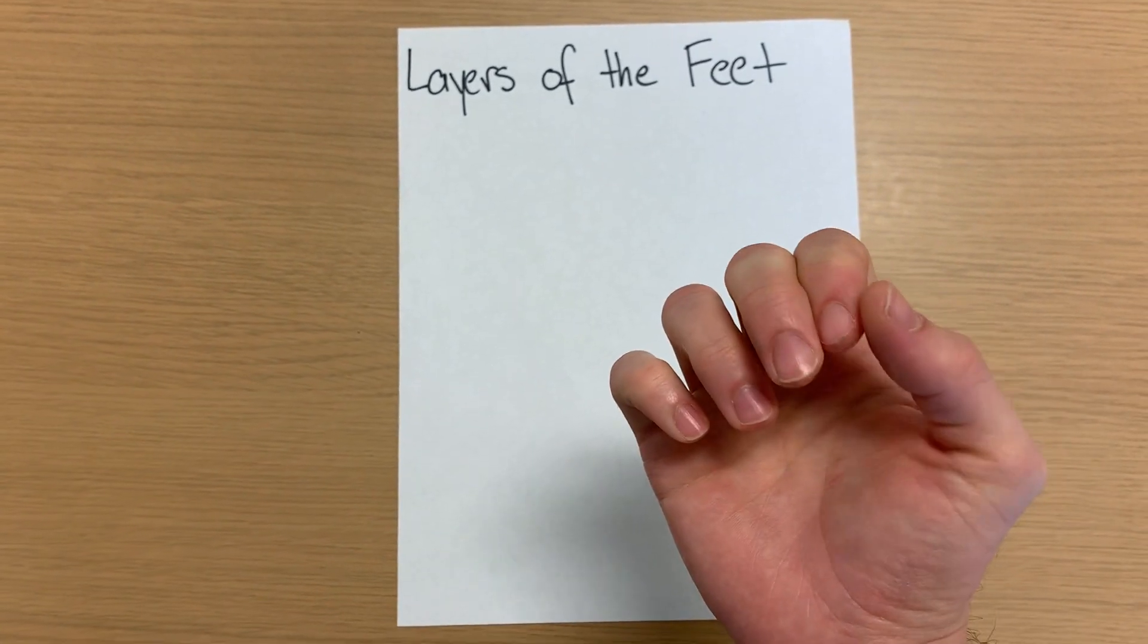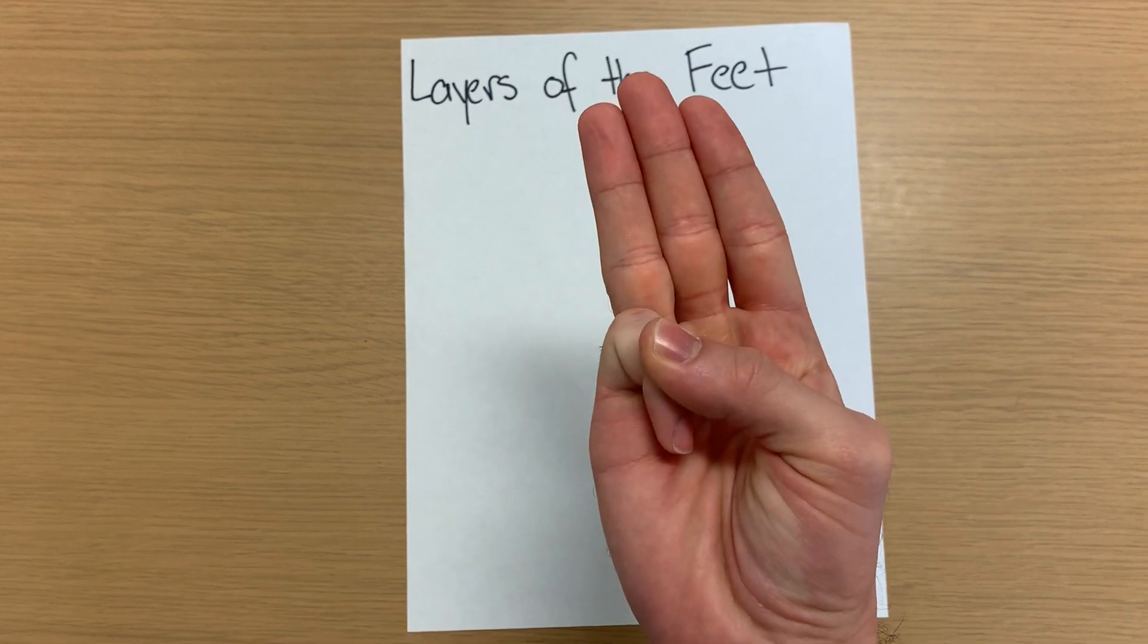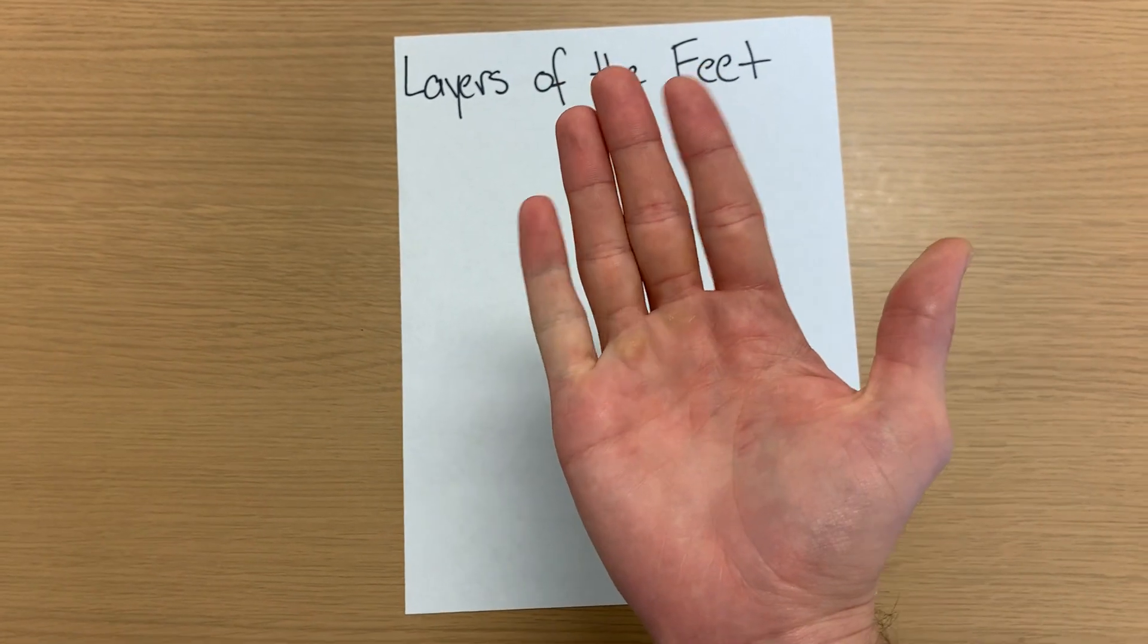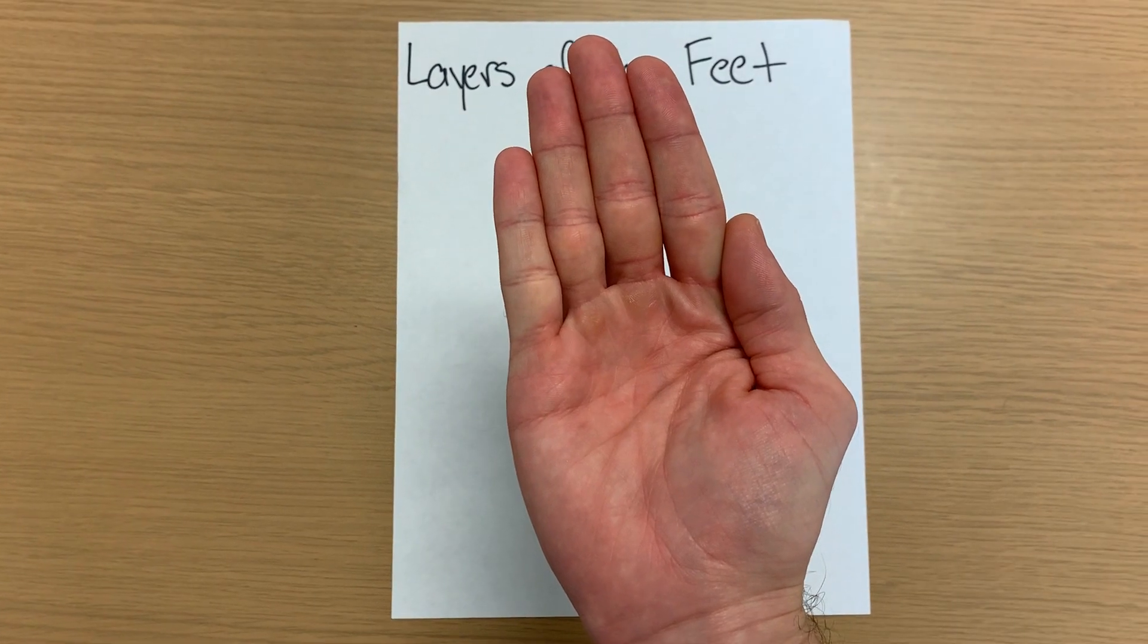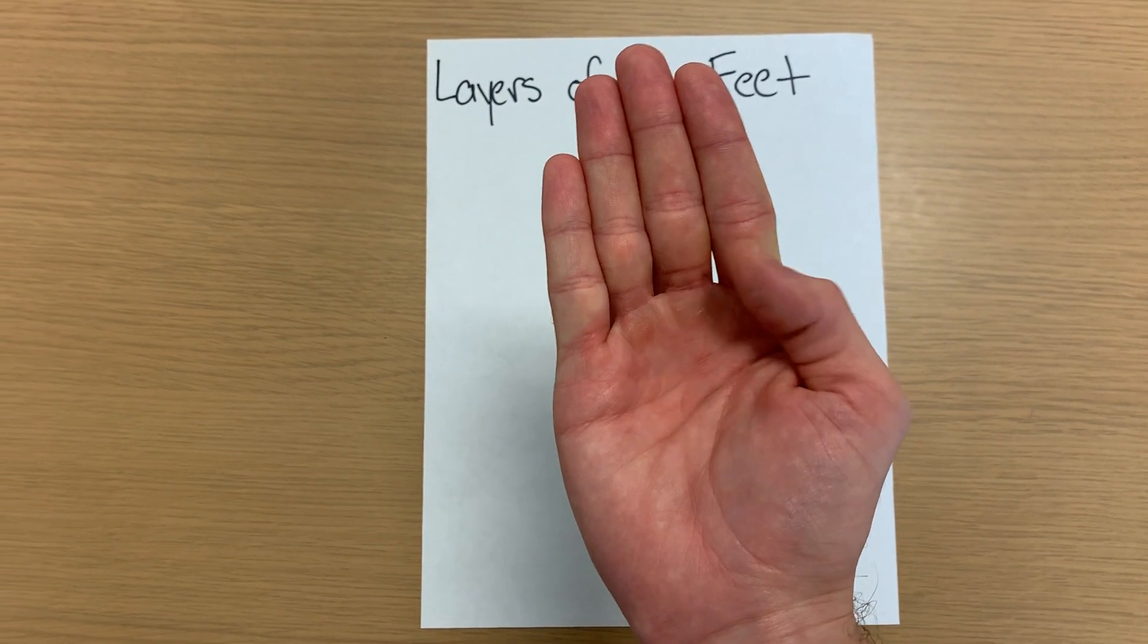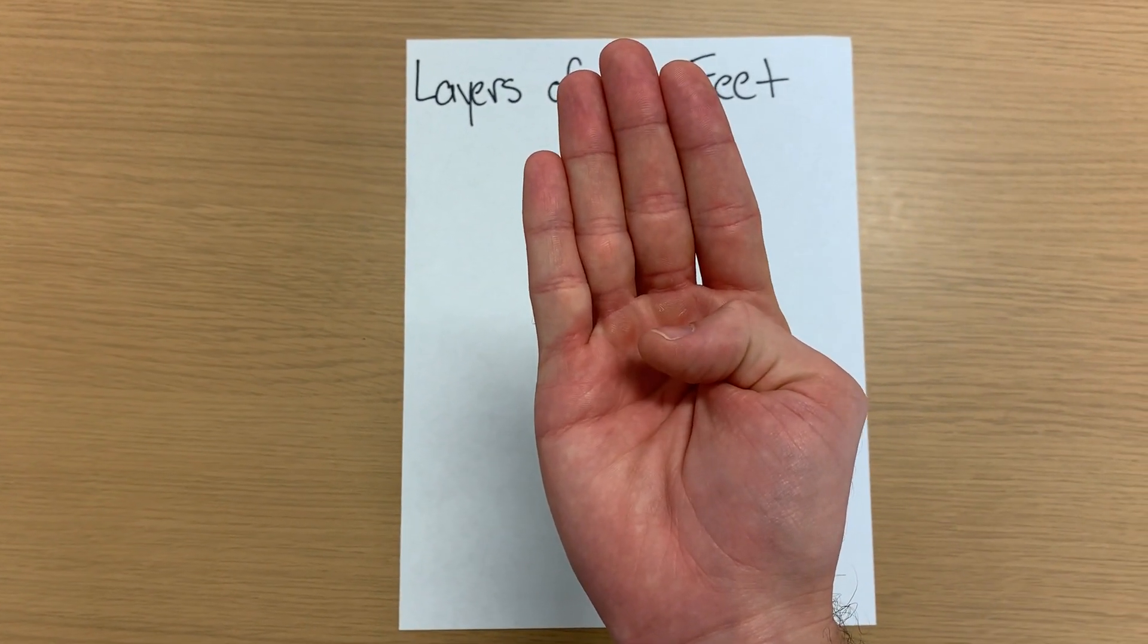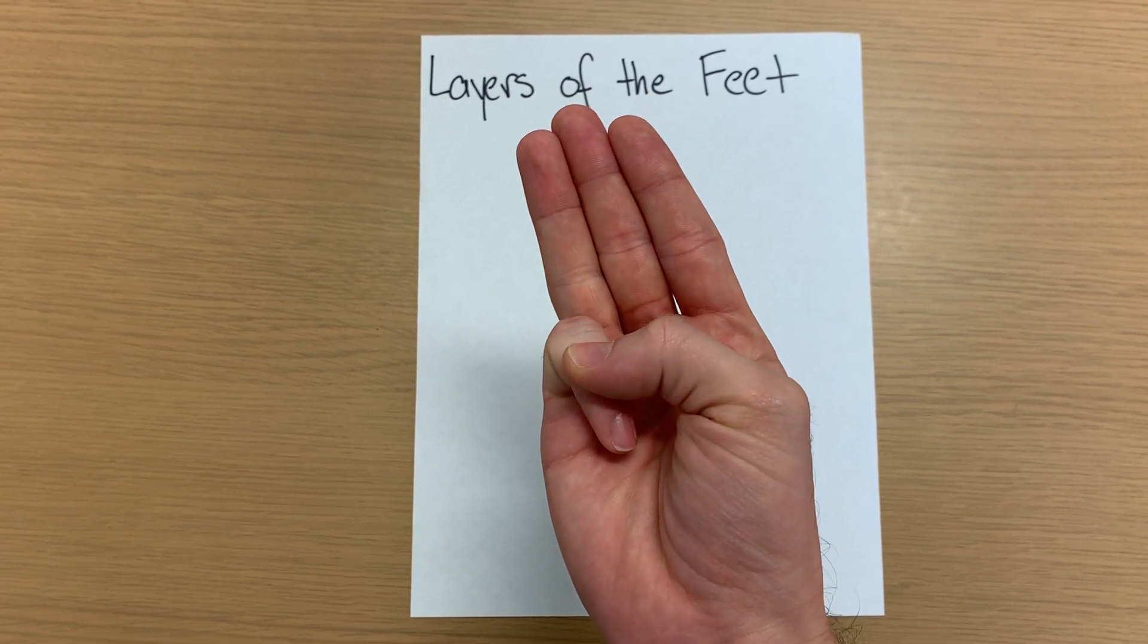Now for our third muscle layer, we hold up a three like this, or the Boy Scout sign, whatever works for you. So to make this, we have our adductor hallucis. And just remember there are two heads to that, oblique and transverse, flexor hallucis brevis, and then our flexor digiti minimi brevis.